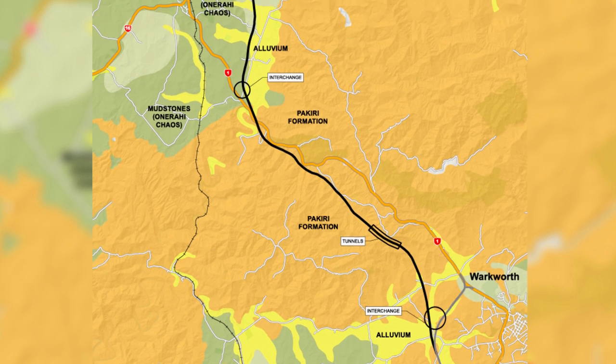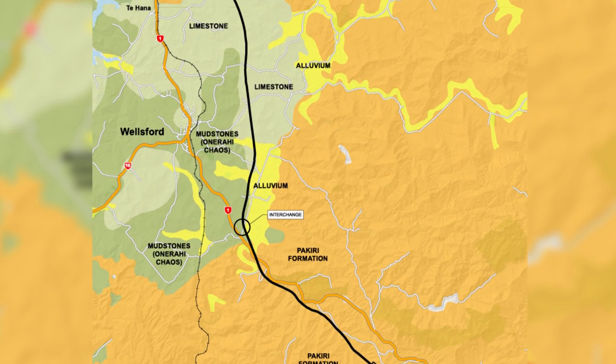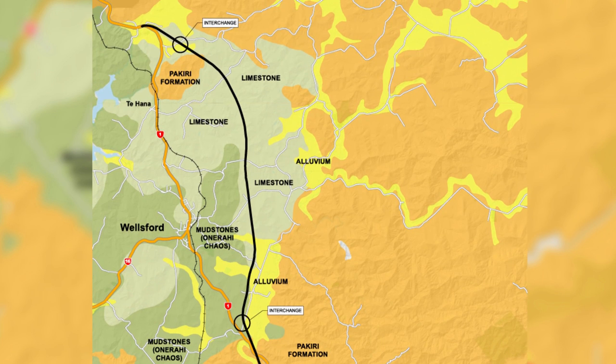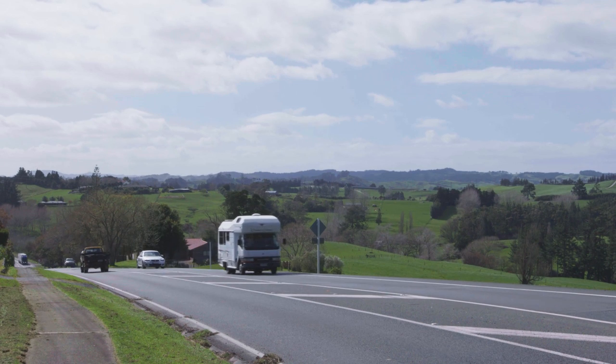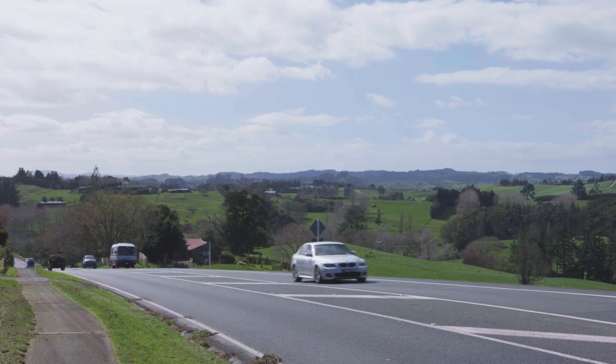The Indicative route is aligned up a valley to the west of State Highway 1, distancing itself from some of the issues that affect the existing State Highway 1. It has avoided a large area just to the east of Wellsford — steep terrain composed of Onurahi Chaos material — and taken advantage of the more stable limestone geology around Wellsford and up around Tehana, which sits on much more gentle terrain.